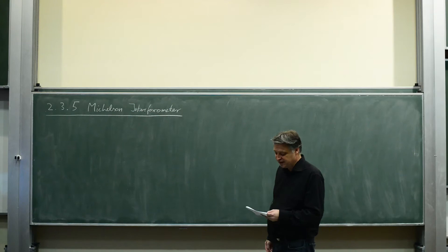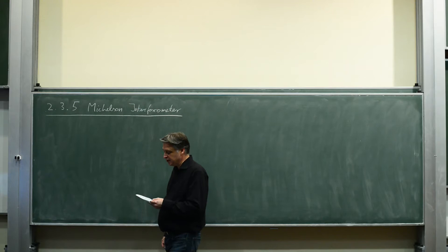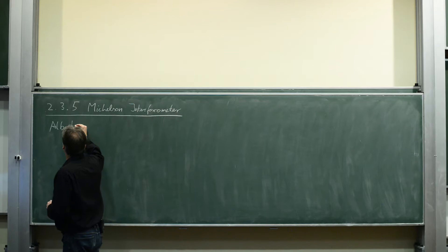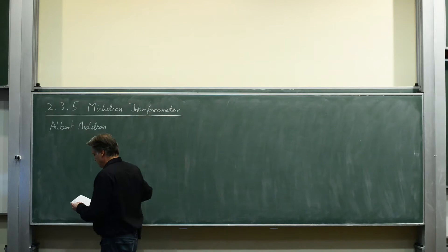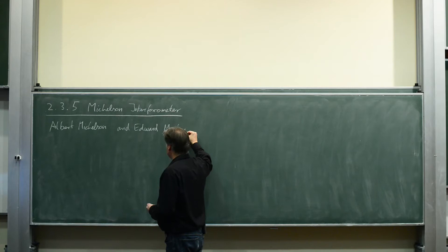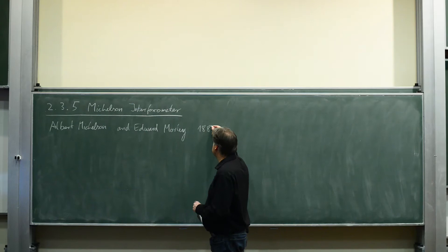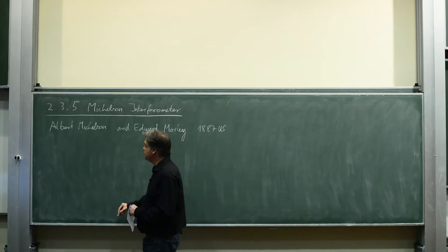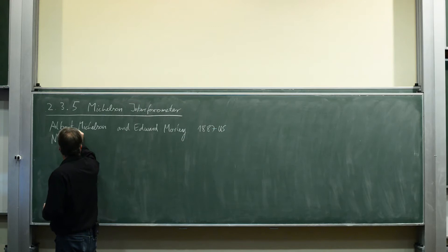The Michelson interferometer is an important other device. Actually it goes back to Albert Michelson and Edward Morley. They did the experiment in 1887 in US and they got the Nobel Prize for that in 1907.